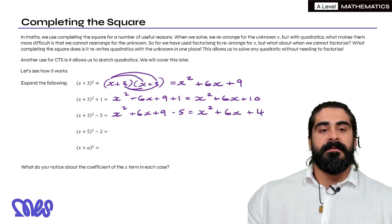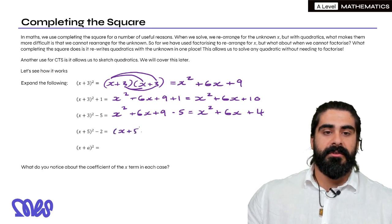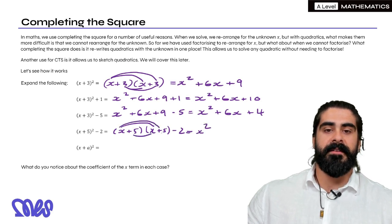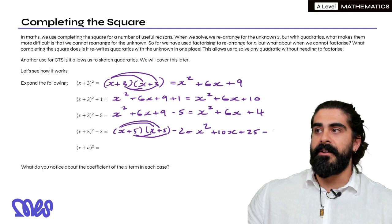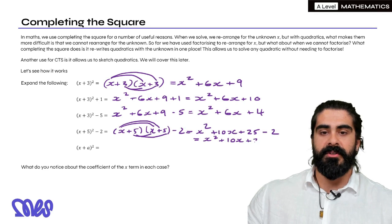Now with X plus 5 squared, we're going to have a similar situation. So writing this out twice. The main thing is you want to see a pattern here. So we're going to have X squared, and we've got 5X plus another 5X which is 10X, and then 25. And then we've got that minus 2 at the end, which together makes X squared plus 10X plus 23.